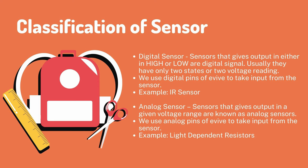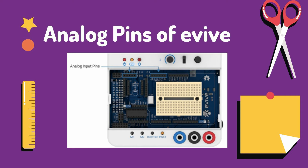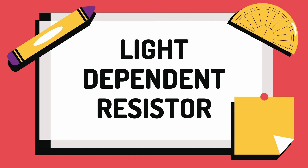We also have the analog sensor, which is another classification of sensor. Sensors that give output in a given voltage range are known as analog sensors. We use the analog pins of evive to take input from the sensor. An example is the light dependent resistor (LDR).